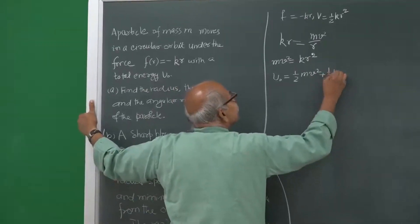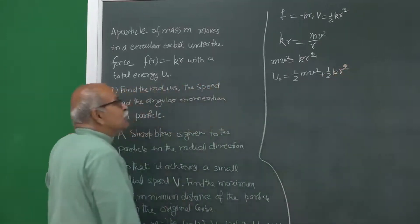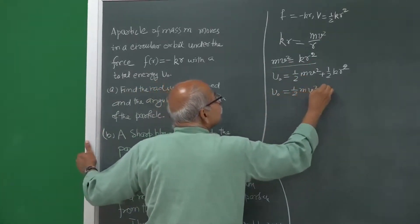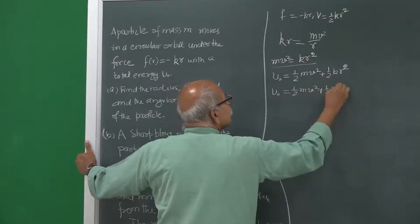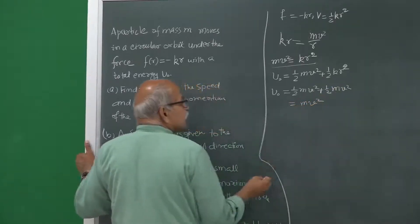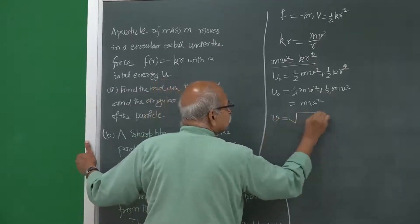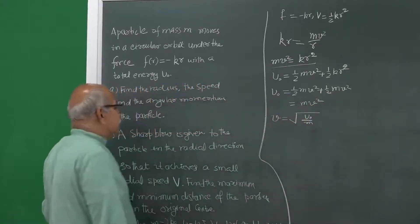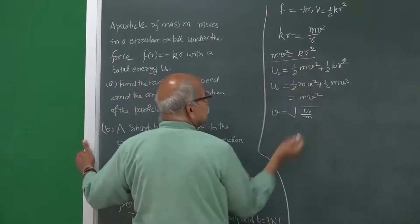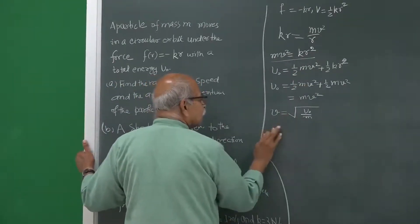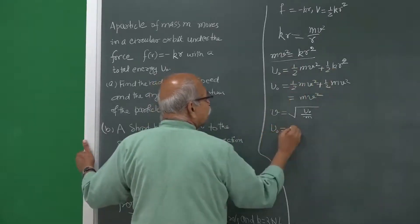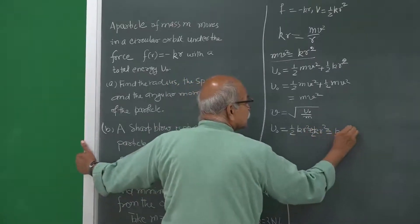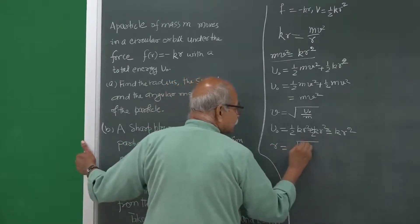So the total energy is half m v squared plus half k r squared. These are the two equations with two unknowns. Using the result that m v squared equals k r squared, we substitute: u naught equals half m v squared plus half k r squared, which becomes u naught equals m v squared. Therefore v equals square root of u naught divided by m. For radius: u naught equals half k r squared plus half k r squared, giving u naught equals k r squared, so r equals square root of u naught by k.